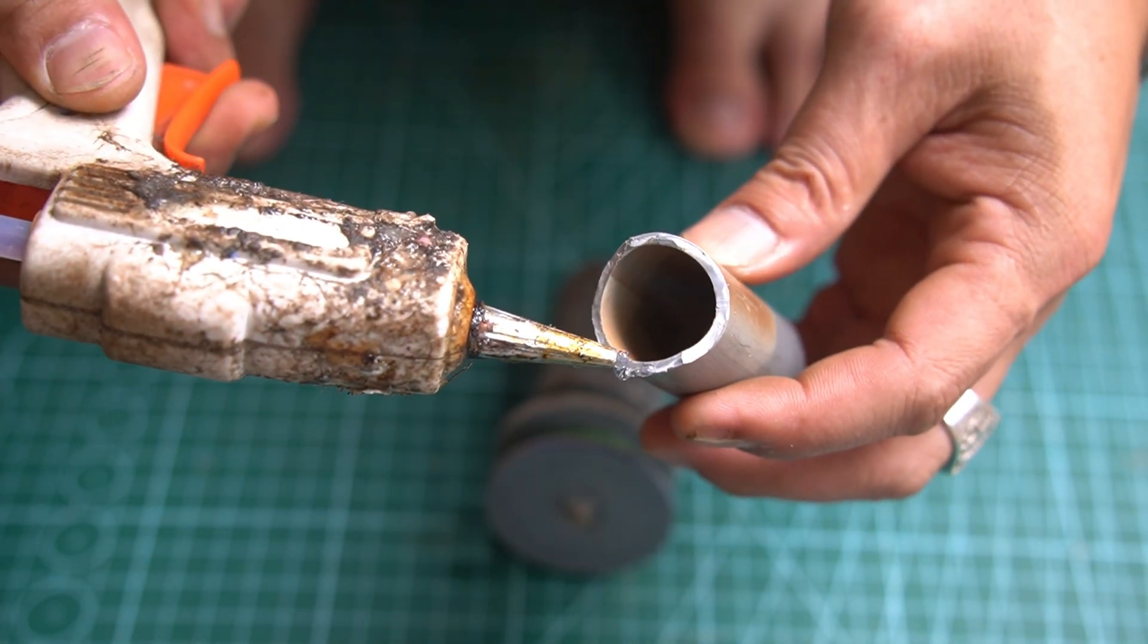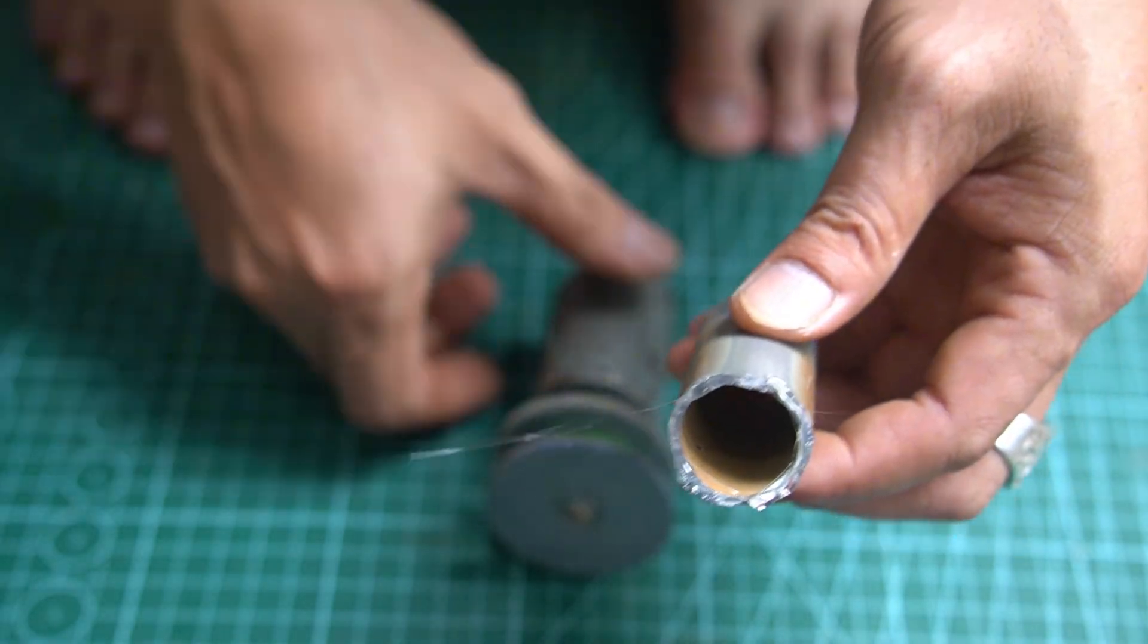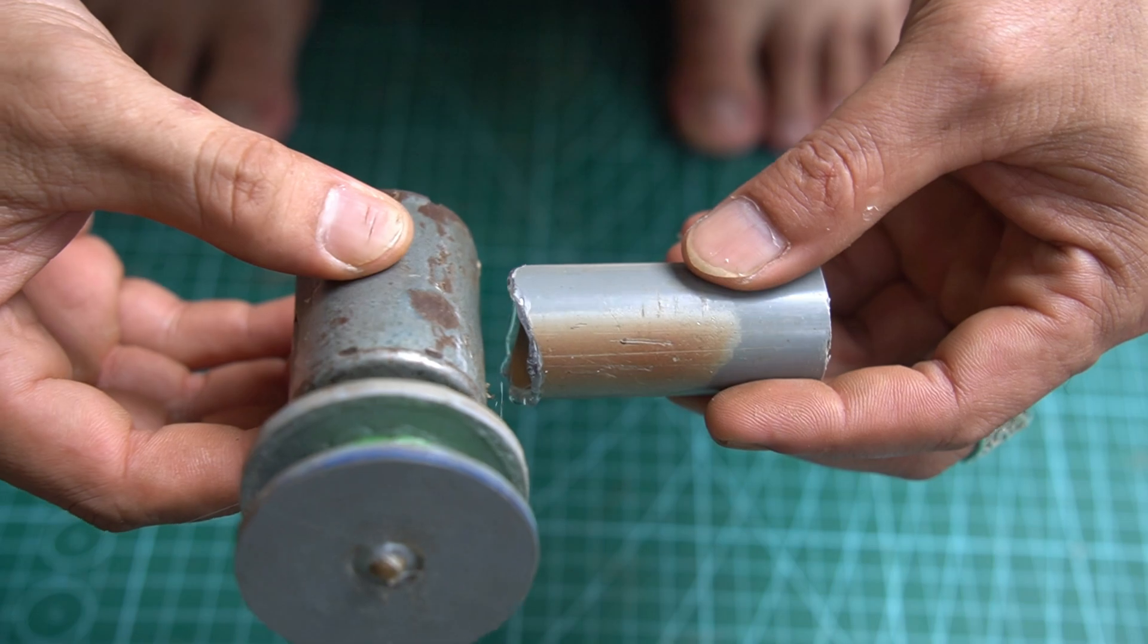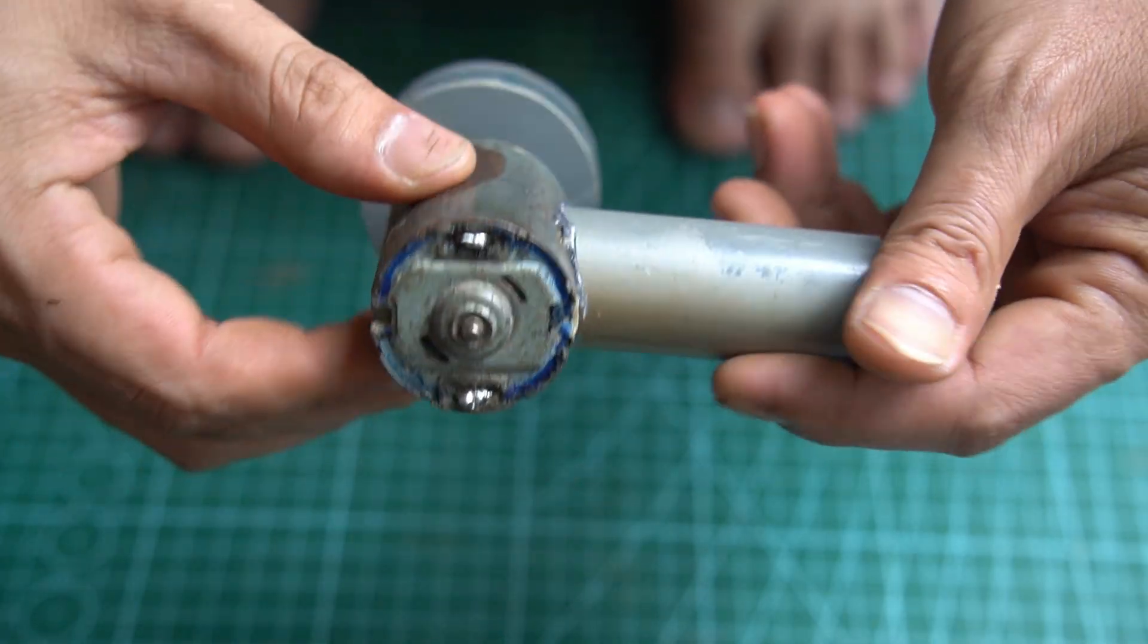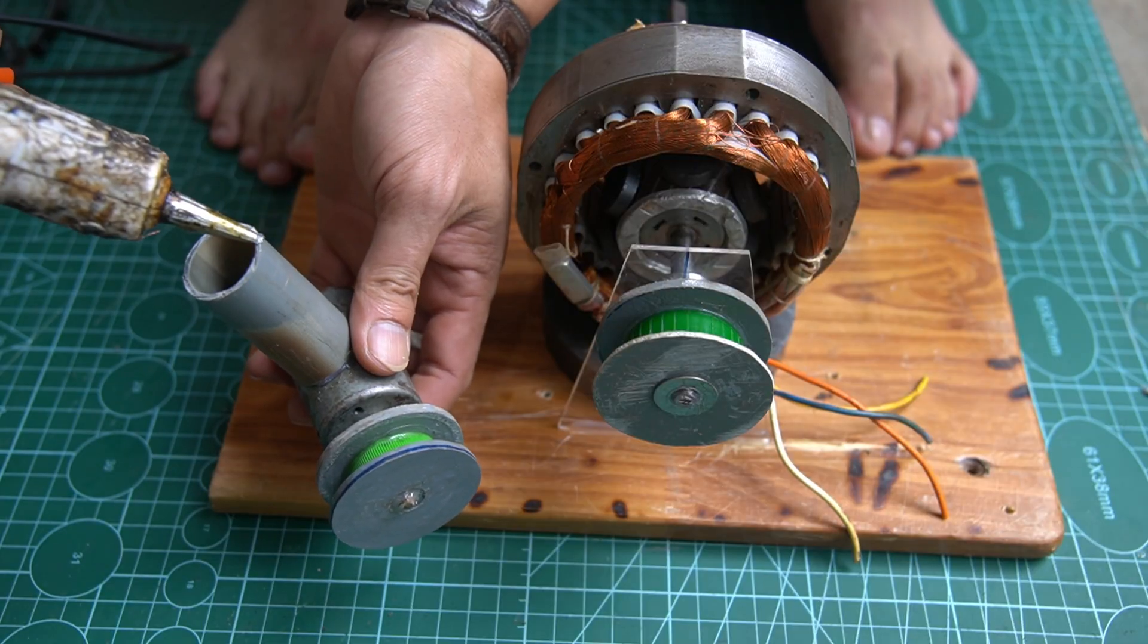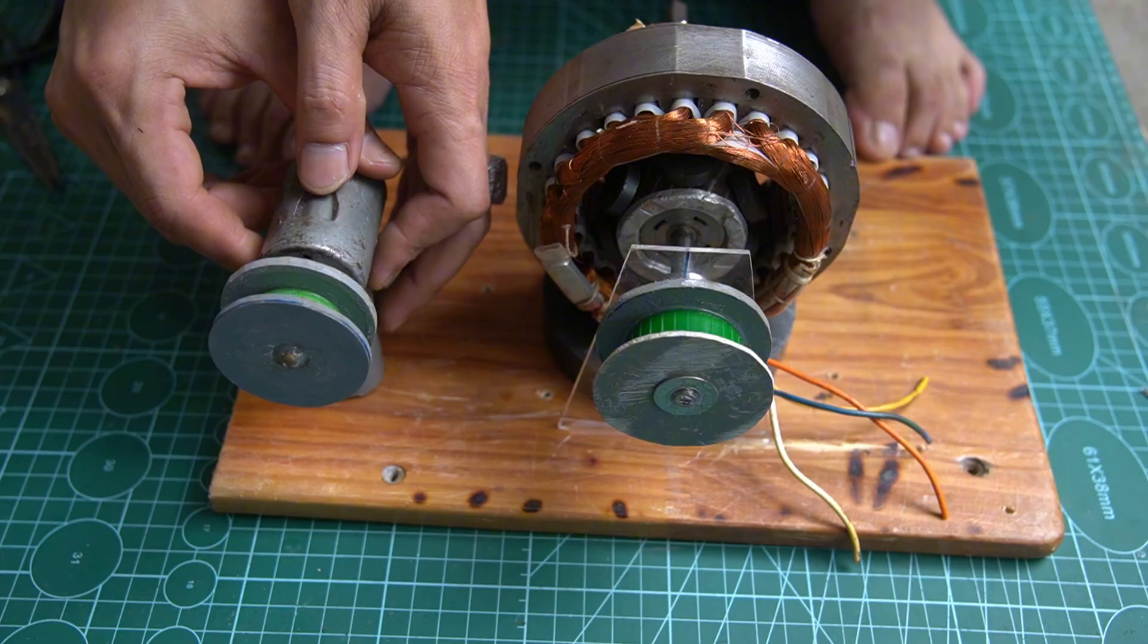Next, I will attach the PVC base firmly to the motor body. Then I'll securely attach the motor base onto the wooden platform using special adhesive glue.